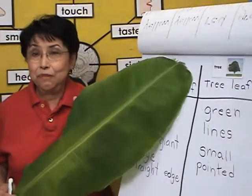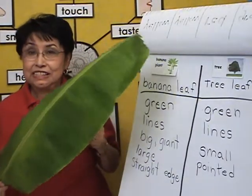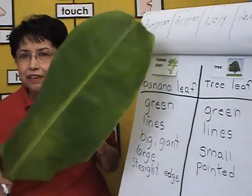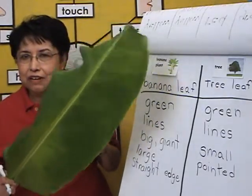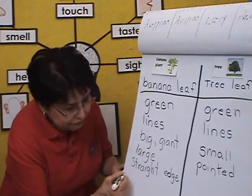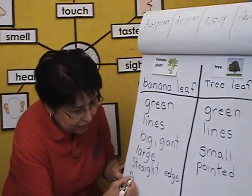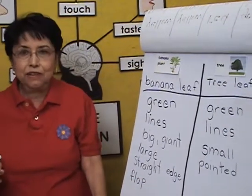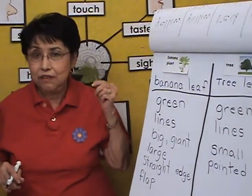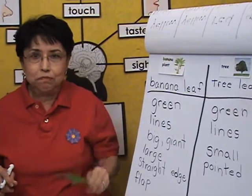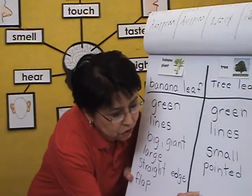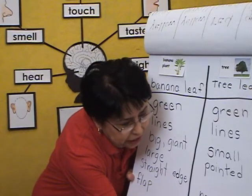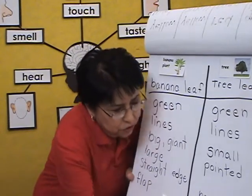Now what do we observe with our ears? Does it make noise? Yes — there's a flapping sound. Flap. So let's say 'flap' — f-l-a-p. What about the tree leaf? Does it make any noise? No noise. So we'll put 'no noise' — n-o-i-s-e.